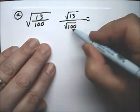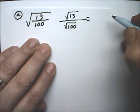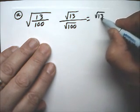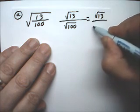And radical 100, well that's 10, the square root of 100 is 10. So, this simplifies to the square root of 13 over 10.